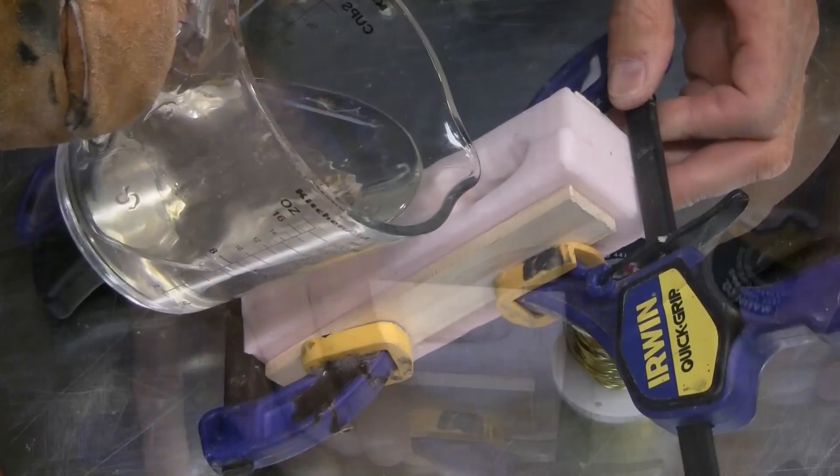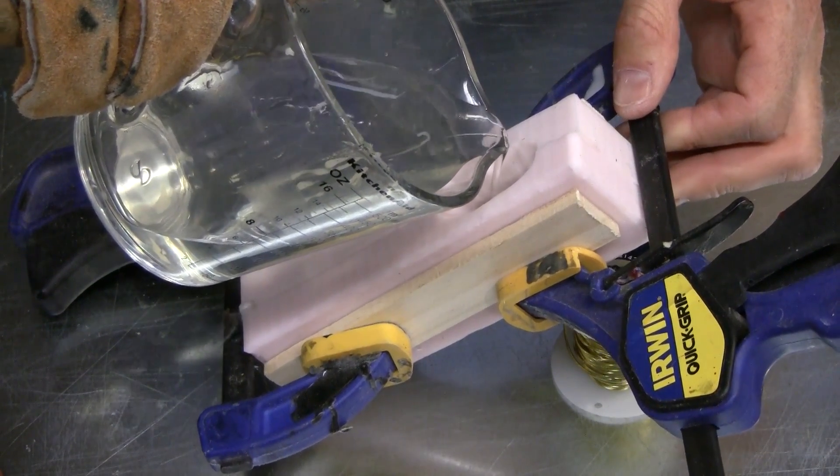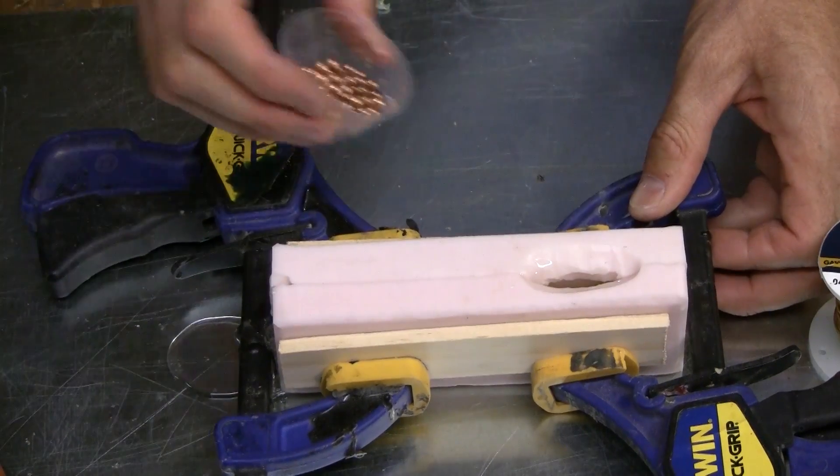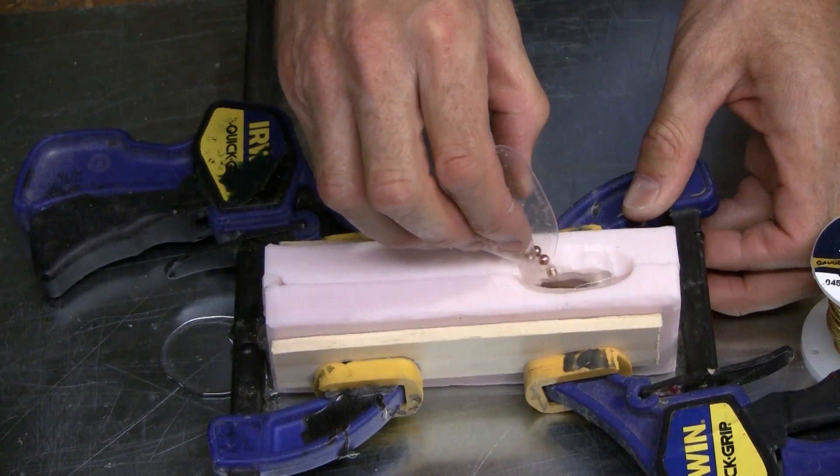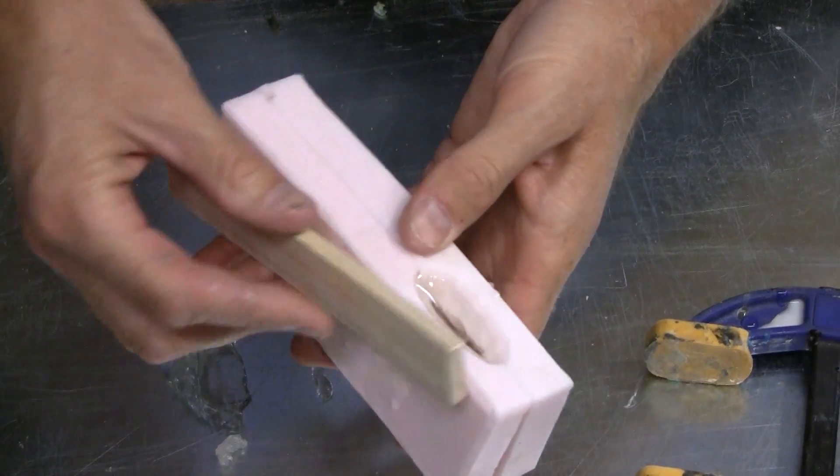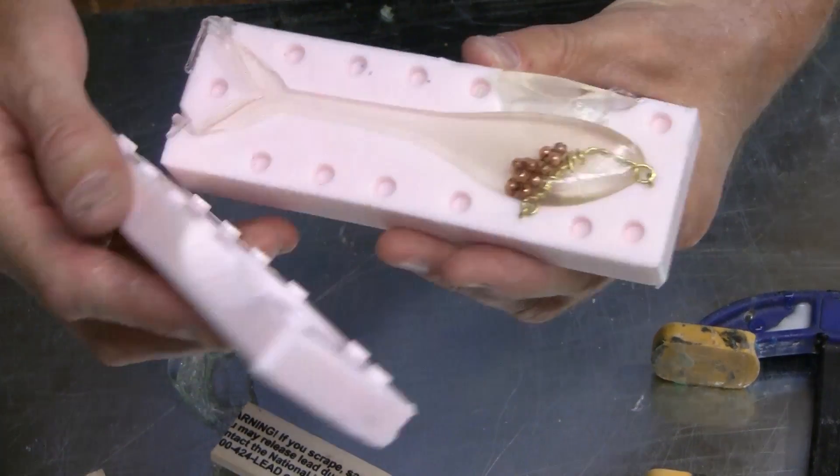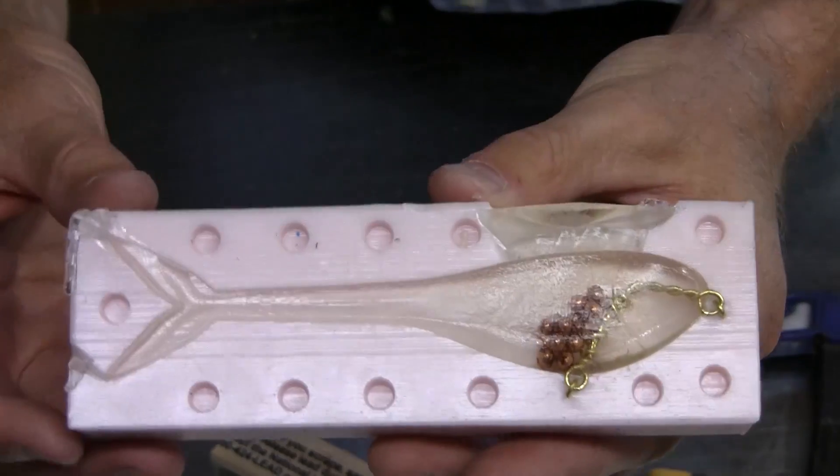We mix up our soft plastic, pour it into our mold. Here we're adding some weight using BBs in the belly. Allow it to cool and go ahead and de-mold. We pour these extremely soft so we get a ton of swimming action in them.